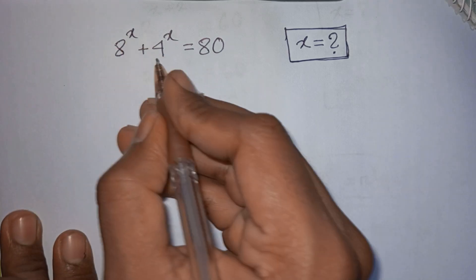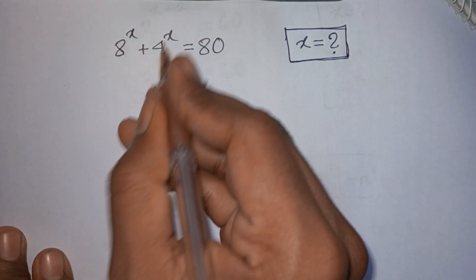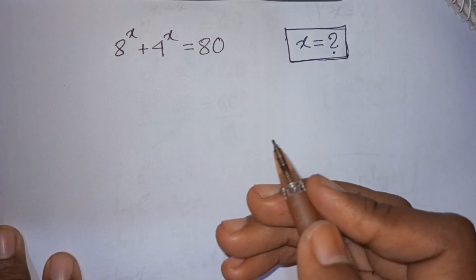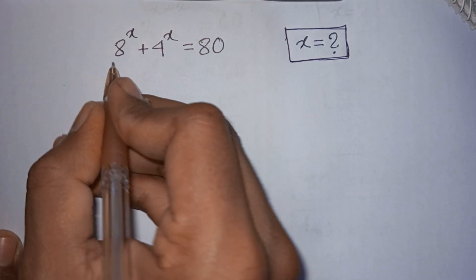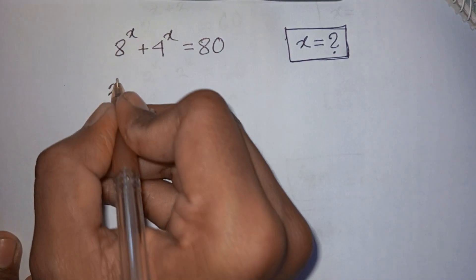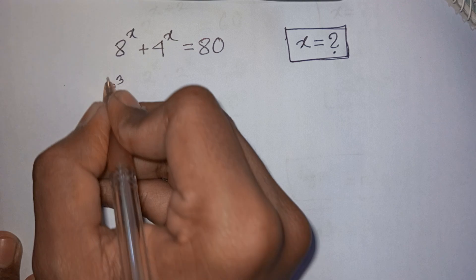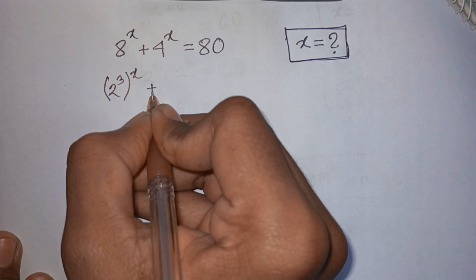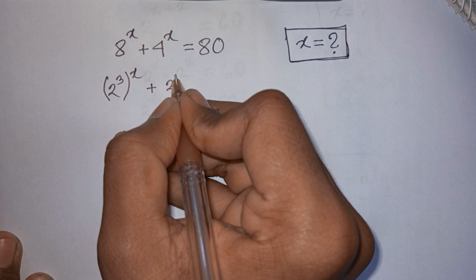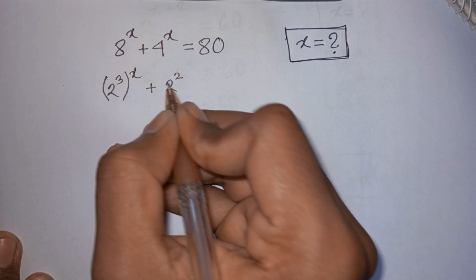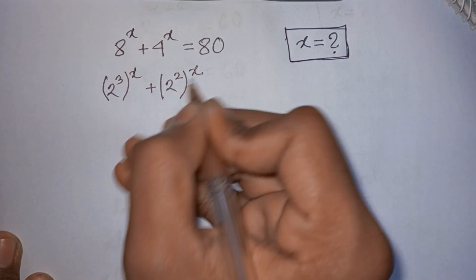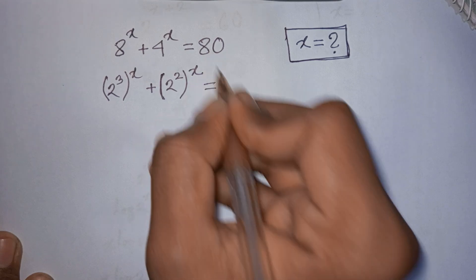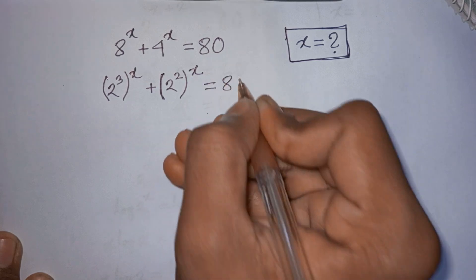How to solve 8 power x plus 4 power x is equal to 80? Find the value of x. 8 power x is the same as 2 power 3 bracket power x, plus 4 power x is the same as 2 power 2 bracket power x, is equal to 80.